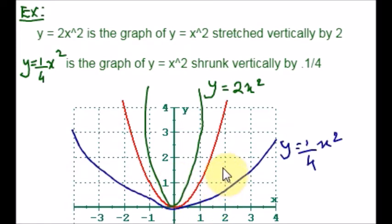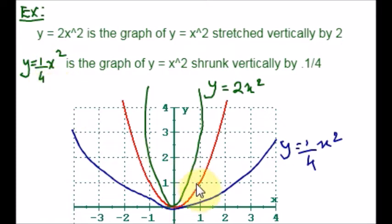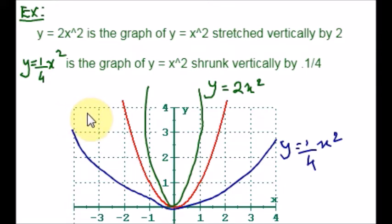Scaling factors are just multiplied or divided. 2 is multiplied here, or you just divide x squared by 4. Scaling factors are a number multiplied or divided by the x or y components. If the constant is grouped with x, then it is a horizontal scaling. Otherwise, it is a vertical scaling.